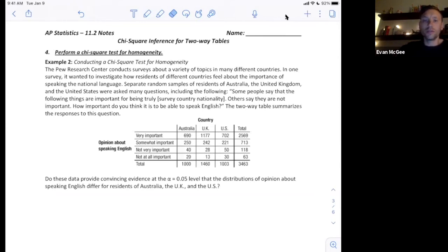The next objective from the notes is to actually perform a chi-squared test for homogeneity. Instead of me working it out and running it all down here, I have it in a PowerPoint, so I'm going to open this up and walk you through this.